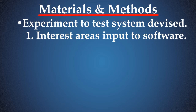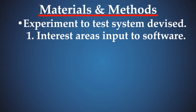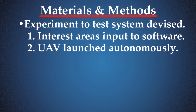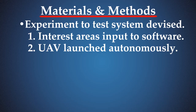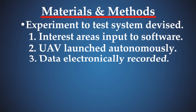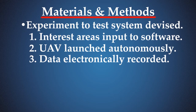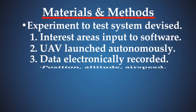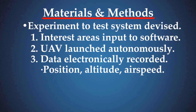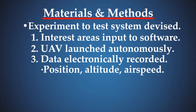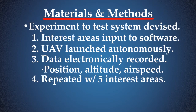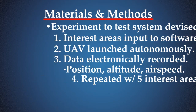Interest areas were selected by an operator with the mission control software, and the drone was deployed under full autonomous control. Data measuring every aspect of the plane's flight — most importantly, locational airspeed and altitude — was electronically recorded. This test procedure was repeated with five differing interest areas.